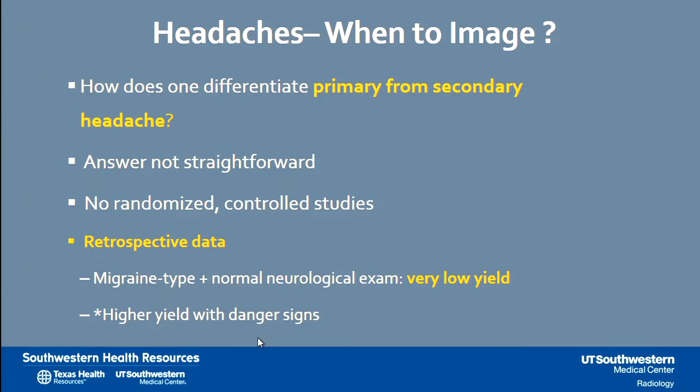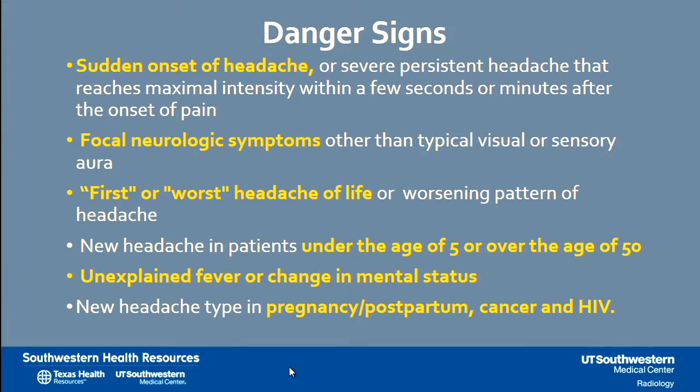Who do we want to image? We can use the clinical history to guide us toward higher yield imaging. Patients with a sudden onset of headaches reaching maximal intensity in a short period of time — you may be worried about subarachnoid hemorrhage or a bleed — those are people you obviously want to image quickly. People with new focal neurologic complaints, a new onset seizure, aphasia, or an upper motor neuron deficit are going to have a much higher yield of imaging.